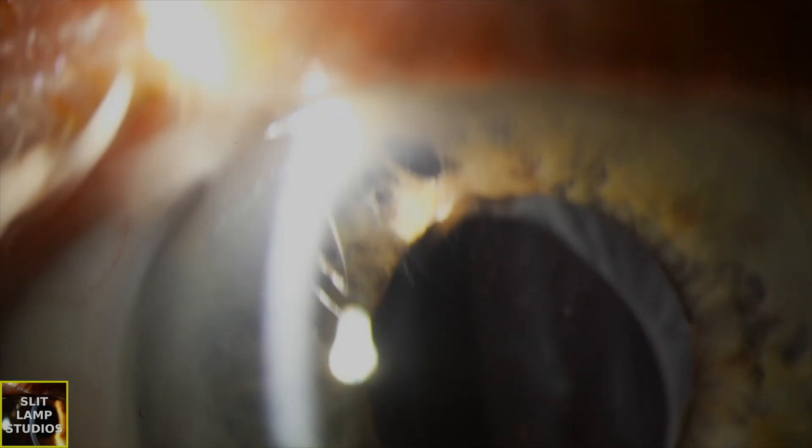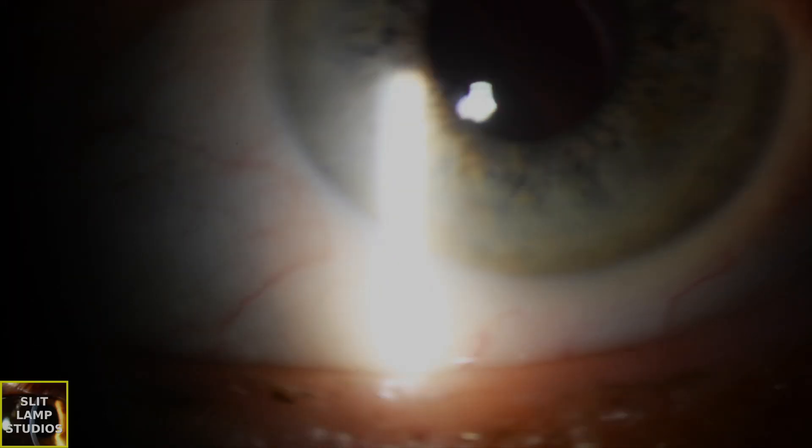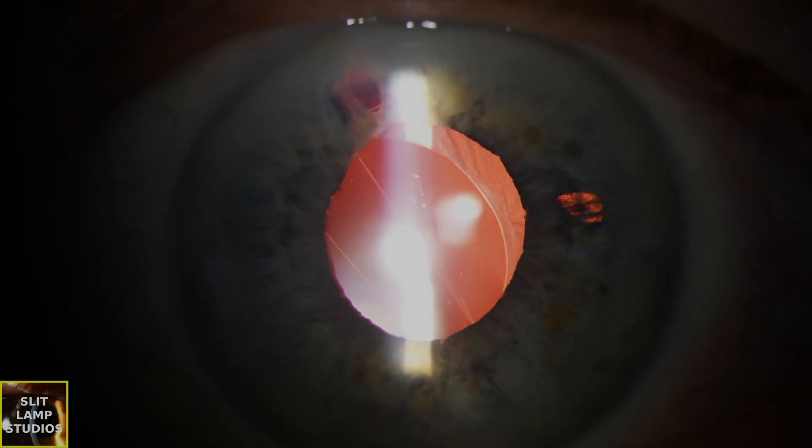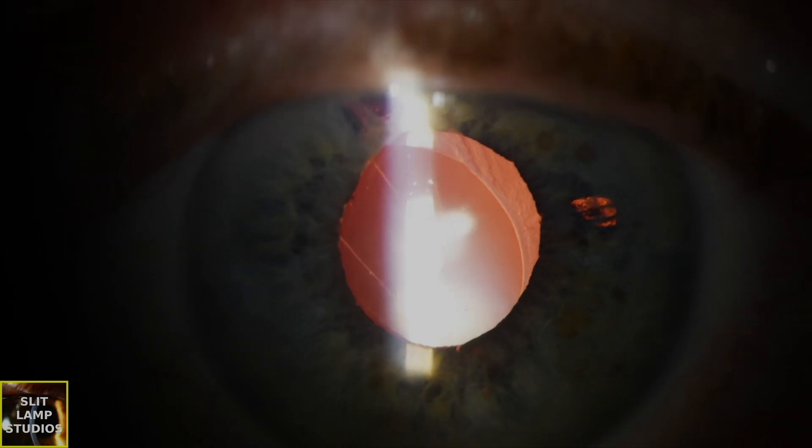Let's have a look at that retroillumination. Maybe a defect superiorly. And there we go, we can see two defects in this patient. There are two transillumination defects, one superiorly, one at the side. And this patient hasn't had a peripheral iridotomy.